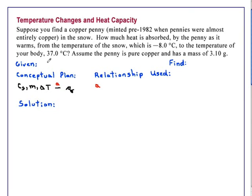How much heat is absorbed by the penny as it warms from the temperature of the snow, which is minus 8.0 degrees C, to the temperature of your body, 37.0 degrees C? Assume the penny is pure copper and has a mass of 3.10 grams.